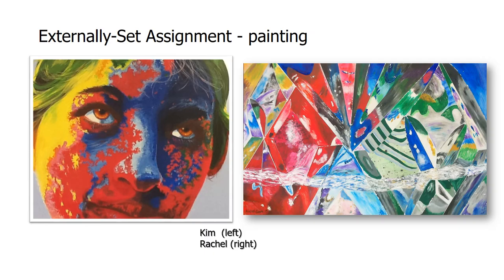Again I've categorised these into different kinds of artwork. On the left, Kim took photos of a friend with face paint on and produced a large painting from that. On the right, Rachel produced a large painting — about four foot wide — based on reflective properties of cut glass with liquid inside, almost abstracting in her approach. These are all 15-hour pieces of work done over three days.